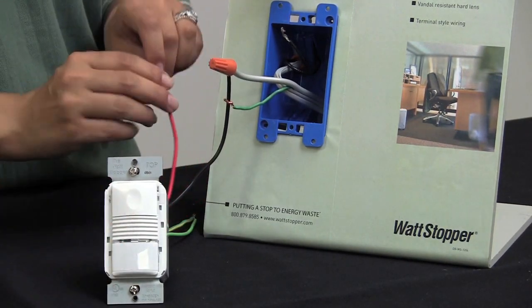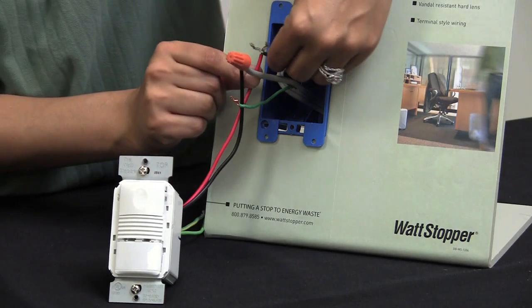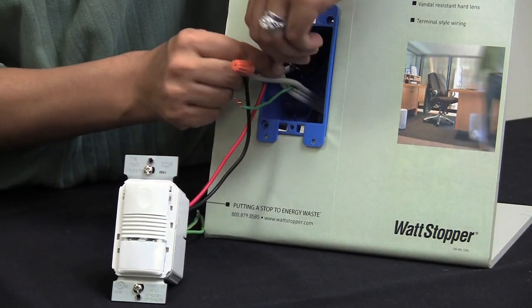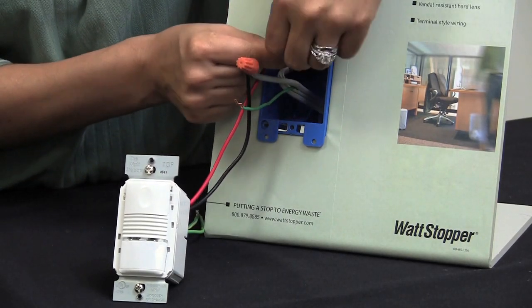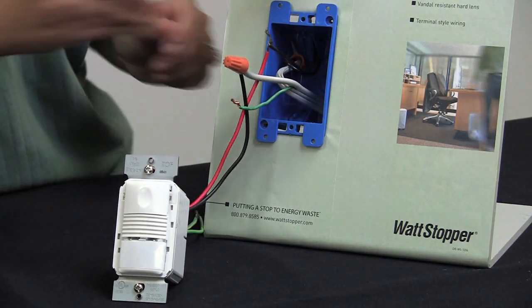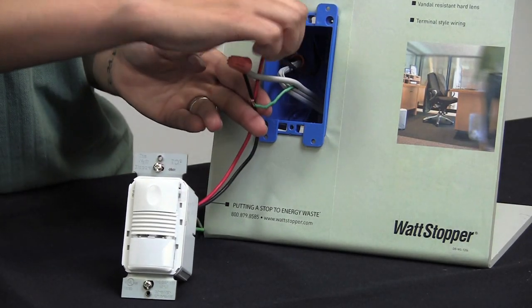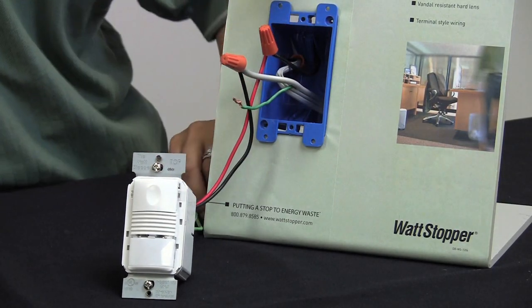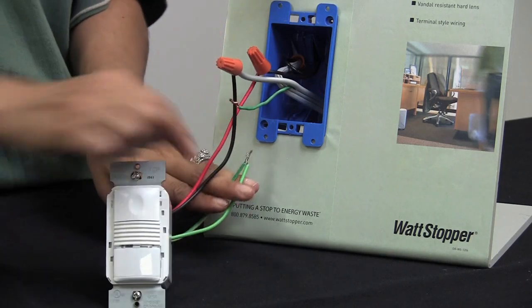Next we will take the red wire from the sensor and wire that to the lighting load. And last we will take the green wire from the sensor and wire that to the ground.